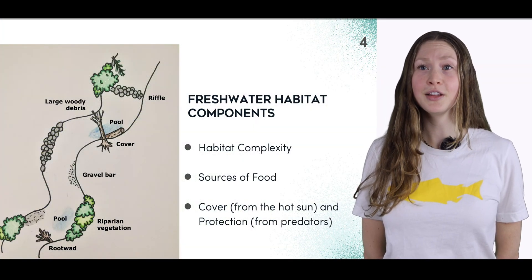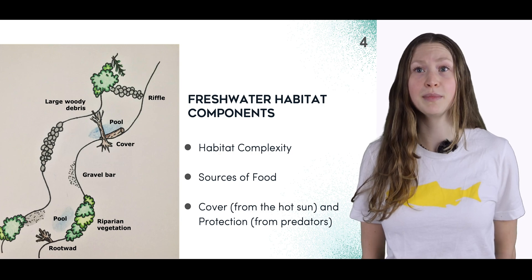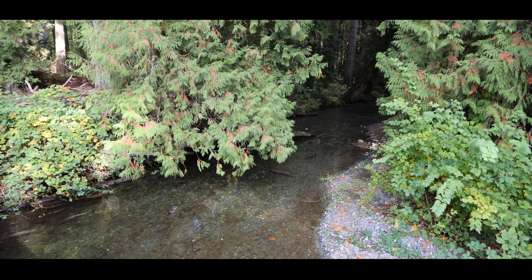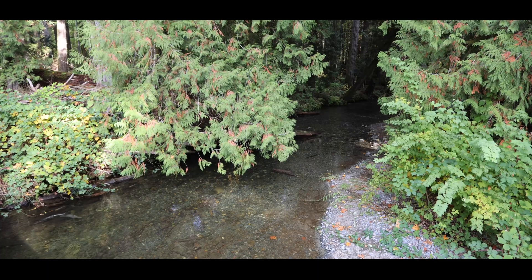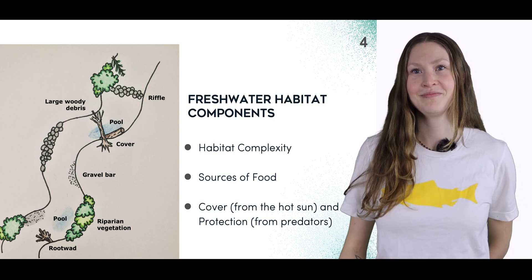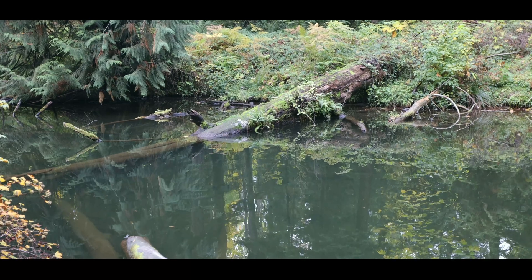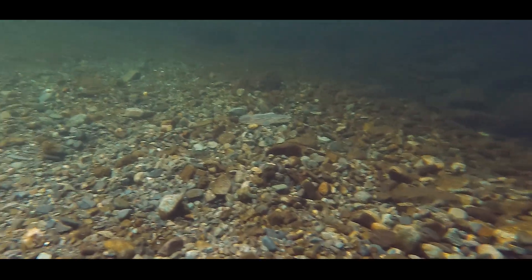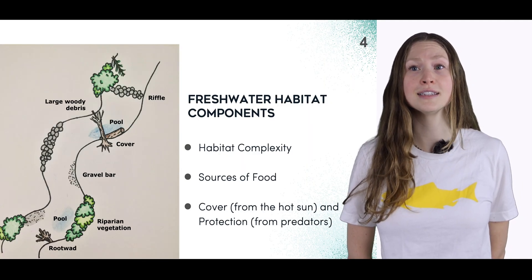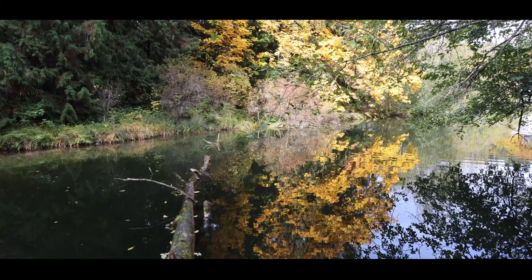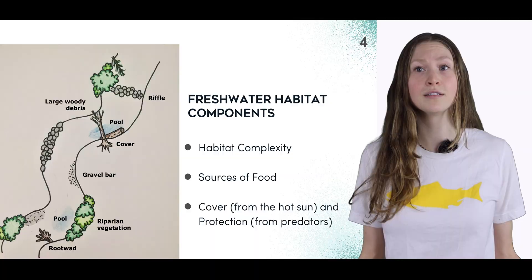From the last video we learned that salmon need habitat complexity. They look for a good mixture of riffles, pools and glides. Of course salmon need to have good sources of food in the stream too, like insects living in the riparian habitat or feeding on LWD — large woody debris — in the stream. Salmon can also feed on brown algae in the stream which grows naturally on boulders, cobbles and LWD. Finally, salmon need cover from the hot sun and protection from predators. This can also come from in-stream LWD and from overhanging vegetation in the riparian buffer.